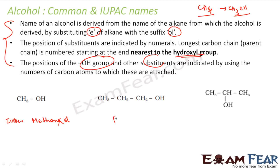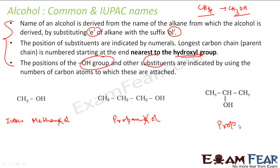Same thing here. This is from propane — you remove '-e' and make it '-ol', so it becomes propanol. But the OH is at the second position — 1, 2, 3. So it will be propan-2-ol. From propane you have got propan-2-ol. The OH is at the second position, so it becomes propan-2-ol.